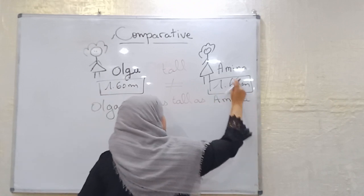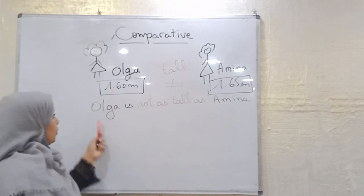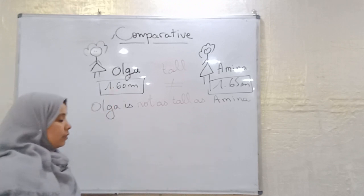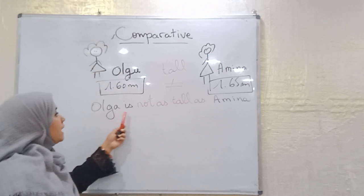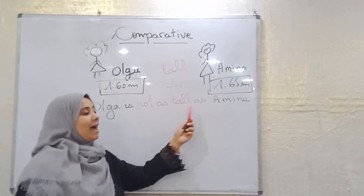So Amina here is taller than Olga. We can say in another way, Olga is not as tall as Amina.